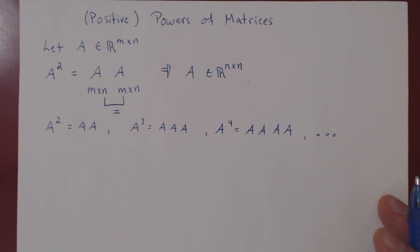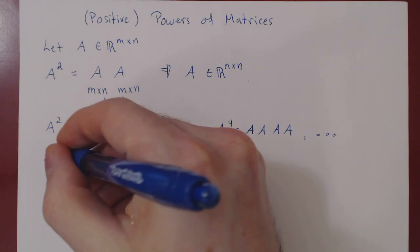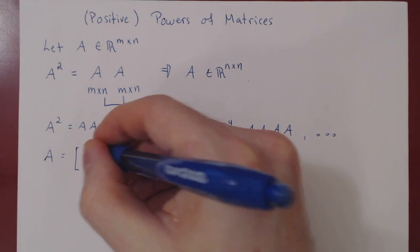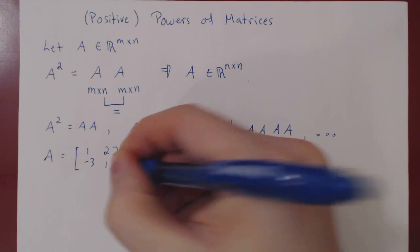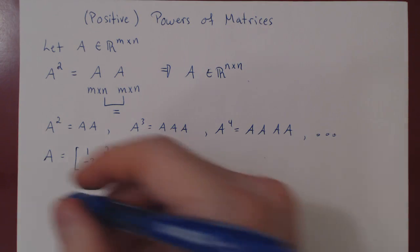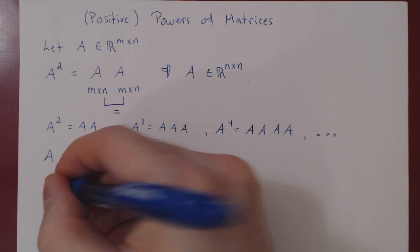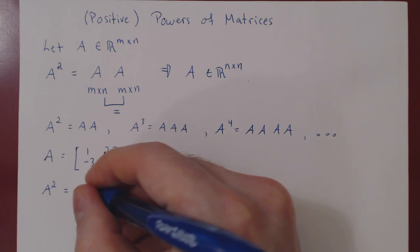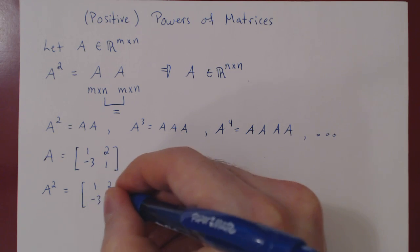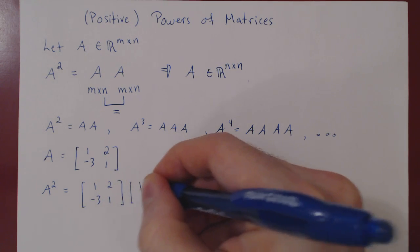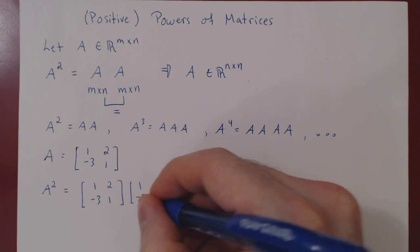We'll take a 2 by 2 matrix. So what if we take A to be the matrix 1, 2, negative 3, 1. Well, let's compute A squared, which is simply A times A. So 1, 2, negative 3, 1, times 1, 2, negative 3, 1.